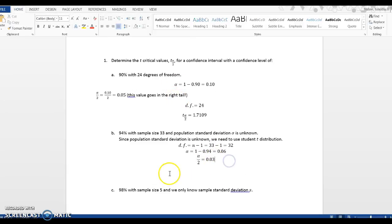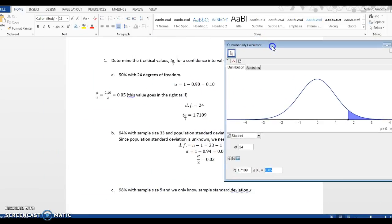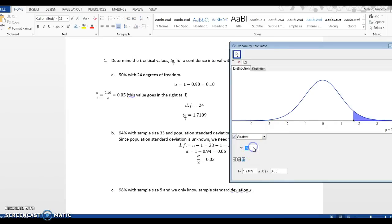I need to go to GeoGebra. Degrees of freedom in this case is now going to be 32, click on enter. And right inside this box, the equals box, I'm going to type 0.03, click on enter.